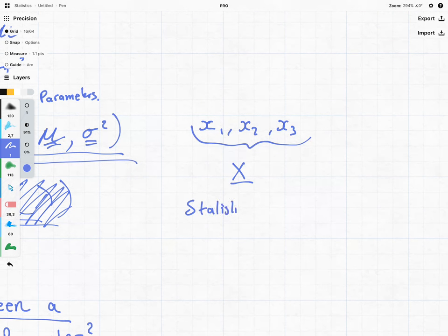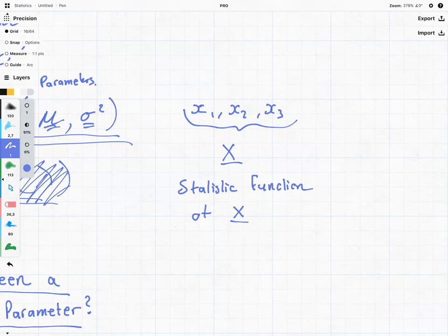is a mathematical function of the random sample, or stated more mathematically, a statistic is given by this, where g is just representing that we're doing a function.